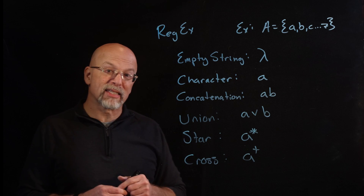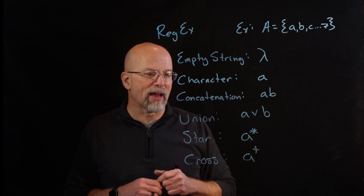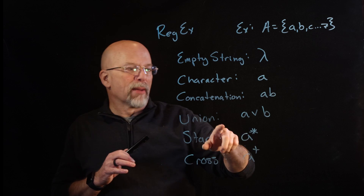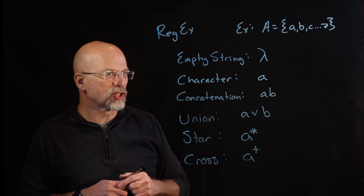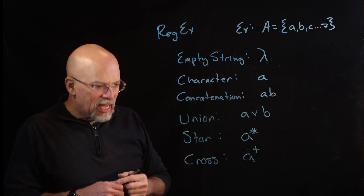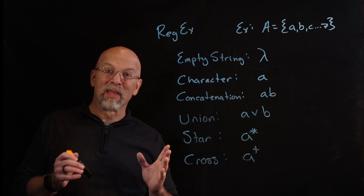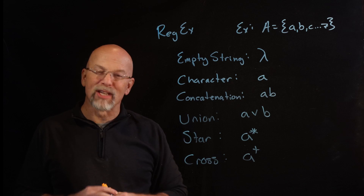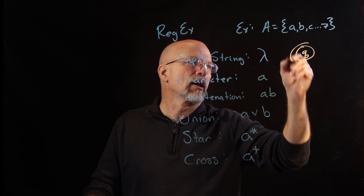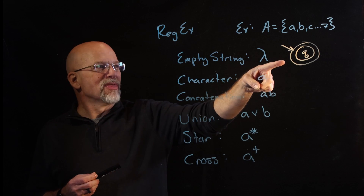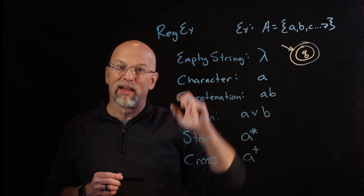What we want to do now is show how finite state machines — those graphs with directed edges — can be used to represent any regular expression. For the empty string: as soon as you enter your initial state, you're already in your final state because no characters are needed. So the initial state and final state are the same — that single double-circled node is the FSM for the empty string.